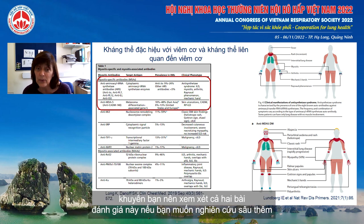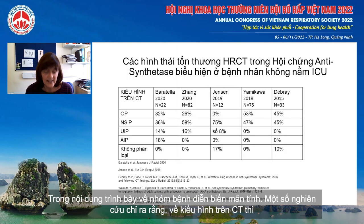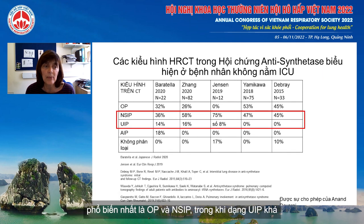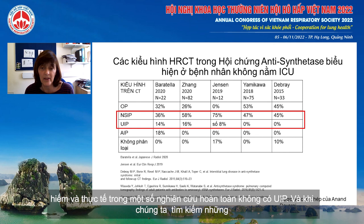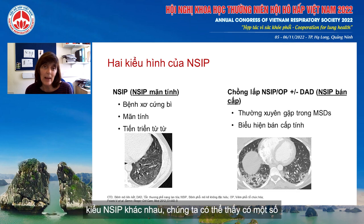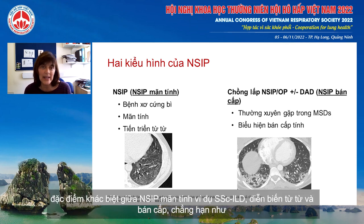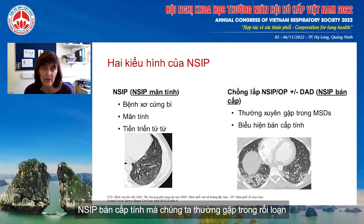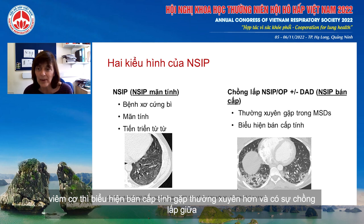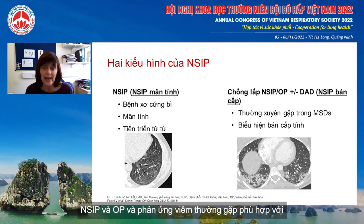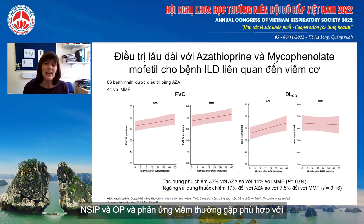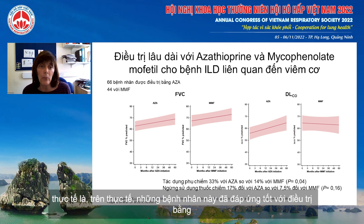In the context of more chronic presentation, a number of studies have shown that in terms of CT pattern, the most common are organizing pneumonia and NSIP, whereas a UIP pattern is quite rare and in some series was not present at all. When looking at different types of NSIP, there are differences between the chronic NSIP of scleroderma — which is gradually progressive — and the subacute NSIP frequently seen in myositis spectrum disorder, where a subacute presentation is more frequent and there is an overlap between NSIP and organizing pneumonia. This more inflammatory pattern probably explains why these patients usually do quite well on immunosuppression.